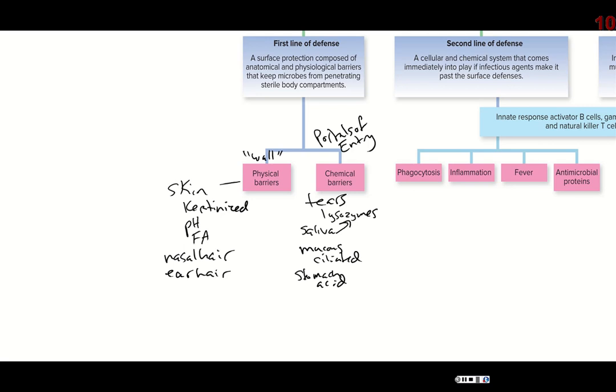Moving over to the ear — earwax is a kind of specialized type of material. It's produced similarly to the oil of your skin from the sebaceous glands. But earwax is a little bit thicker, and it provides a waxy layer on the inside of the ear canal that helps protect it.